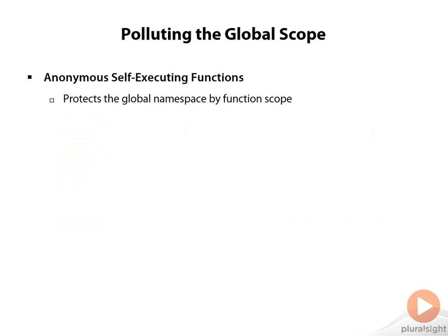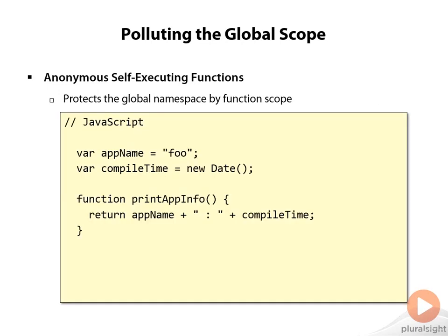A solution here is to use something called anonymous self-executing functions. This helps you protect the global namespace by using scoping of a function. Here we have that same set of variables and functions, but if we want to protect them from the global scope, we can simply surround them with a function. Putting them inside a function hides all of this from the global scope, because it creates a scope inside of the function.